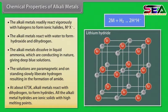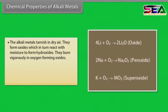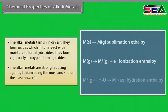On standing, these solutions slowly liberate hydrogen, resulting in the formation of amide. At about 673 Kelvin, alkali metals react with dihydrogen to form hydrides, which are ionic solids with high melting points. The alkali metals tarnish in dry air, forming oxides which react with moisture to form hydroxides. They burn vigorously in oxygen. The alkali metals are strong reducing agents, lithium being the most and sodium the least powerful.